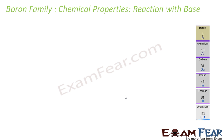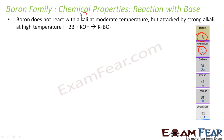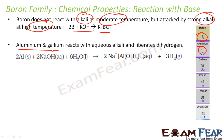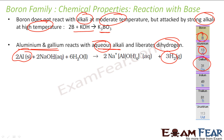Regarding reaction with base: boron does not react with weak alkali at moderate temperature, but with strong alkali at high temperature it reacts — for example, boron plus potassium hydroxide gives K3BO3. Aluminium and gallium react with aqueous alkali and liberate dihydrogen. This proves that aluminium is amphoteric — it reacts with both acid and base.